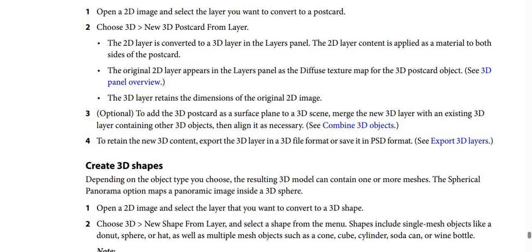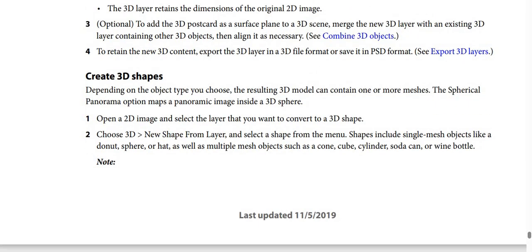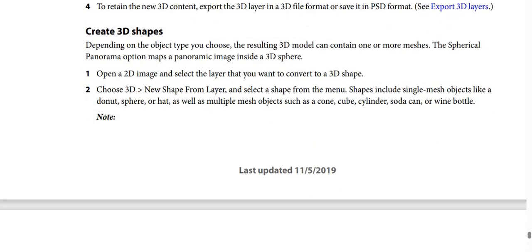Step 3 (optional): To add the 3D postcard as a surface plane to a 3D scene, merge the new 3D layer with an existing 3D layer containing other 3D objects, then align it as necessary. Step 4: To retain the new 3D content, export the 3D layer in a 3D file format or save it in PSD format.